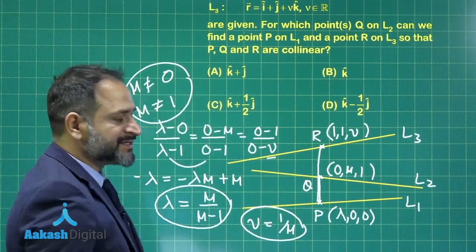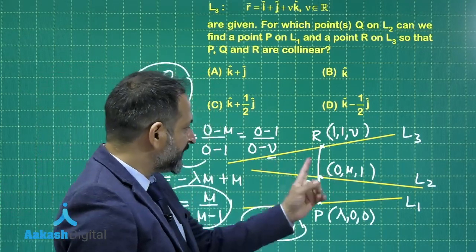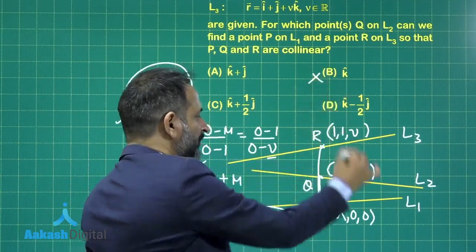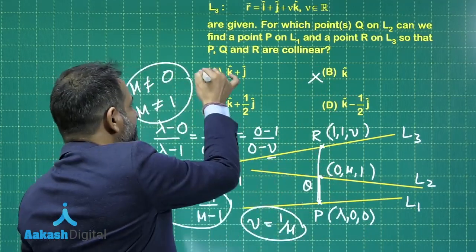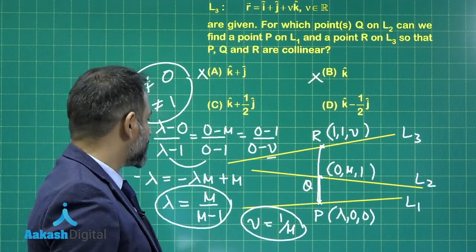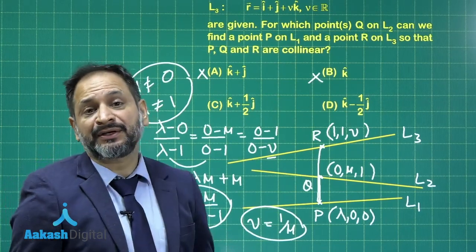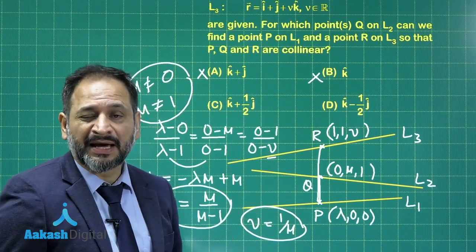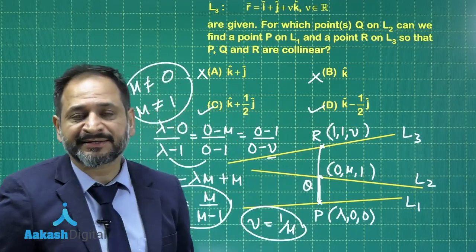From here, μ cannot equal 0 and μ cannot equal 1 — these two possibilities are ruled out. So point Q cannot be (0, 0, 1), and this option is ruled out. It also cannot be (0, 1, 1), so that option is also ruled out. The only options possible — for which μ is defined and λ and ν are also defined — are options 3 and 4, so C and D are the correct options.